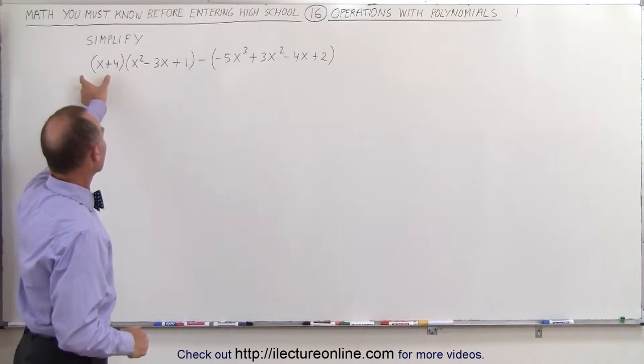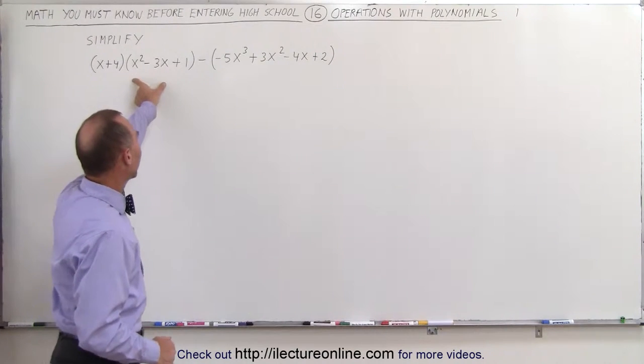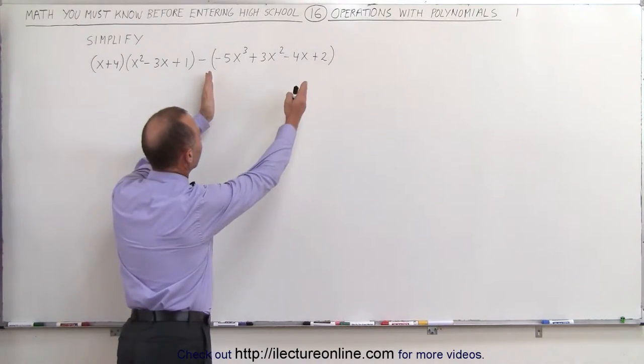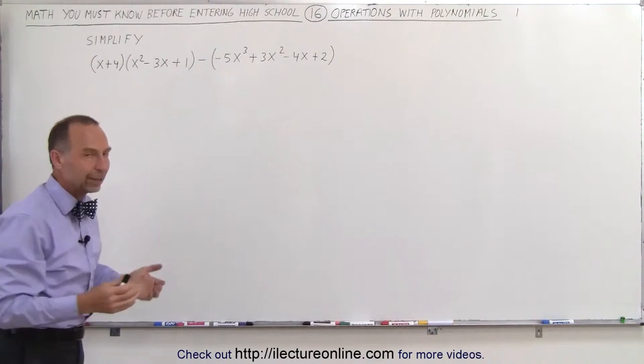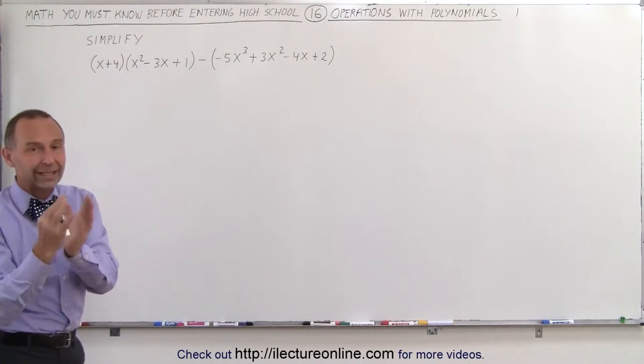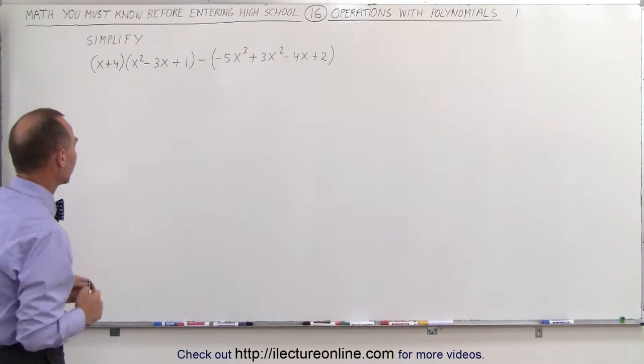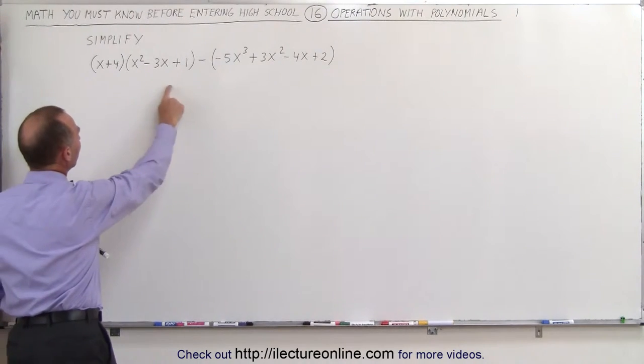So what we need to do here is multiply this binomial times this trinomial, and then subtract from that this polynomial over there. Again, when they say that, they simply mean collect the terms that are like, or collect like terms. So let's multiply this out and see what we get.